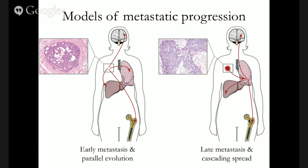The linear progression model has been increasingly under debate, and particularly in the last ten years, the parallel progression model has come to the forefront. This model paints a very different picture: metastasis happens early on, before a tumor even starts invading surrounding tissues, already sending out individual cells to other organs. These metastases then develop in parallel over decades with the primary tumor, and this model predicts that metastases derive independently from the primary tumor rather than giving rise to each other.